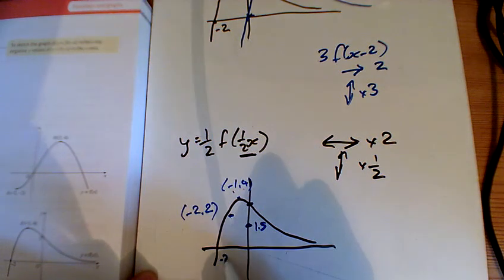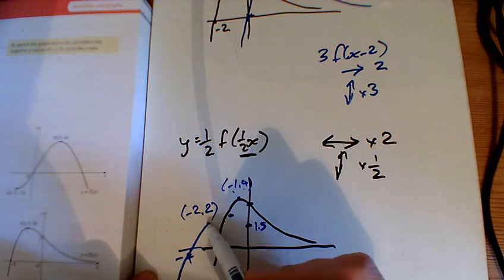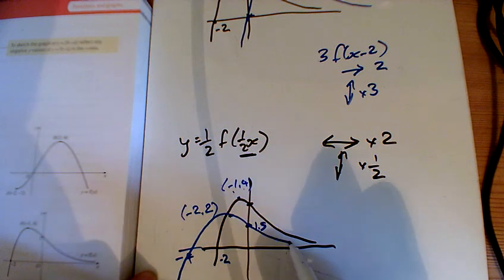And this point here was originally at minus 2, so now it's going to be down here at minus 4, and my graph is going to look something like that.